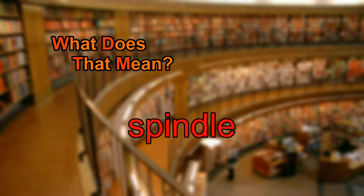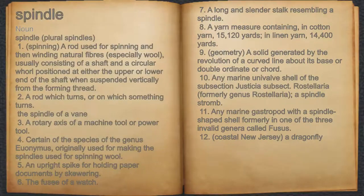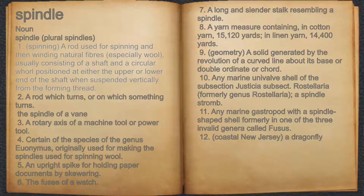What does spindle mean? Spindle. Noun. 1. Spinning: a rod used for spinning and then winding natural fibers, especially wool, usually consisting of a shaft and a circular whorl positioned at either the upper or lower end of the shaft when suspended vertically from the forming thread.